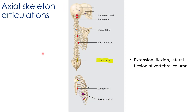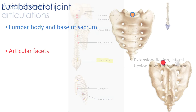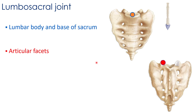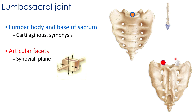The lumbosacral joint allows for extension, flexion, and lateral flexion of the vertebral column and has two points of attachment. The articulation between the lumbar body and the base of the sacrum is a cartilaginous symphysis, just as all articulations between vertebral bodies are. The two superior articular facets of the sacrum articulate with the two inferior articular facets of the L5 vertebra, and those are synovial planes.